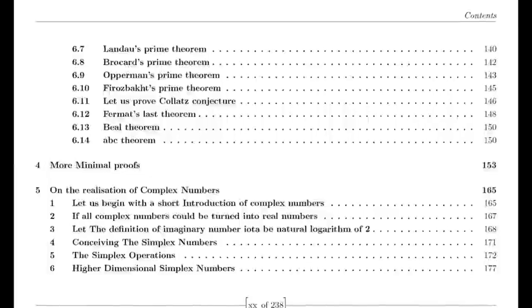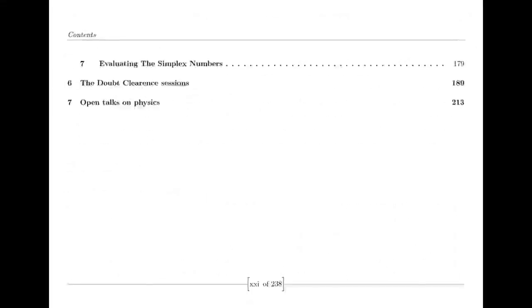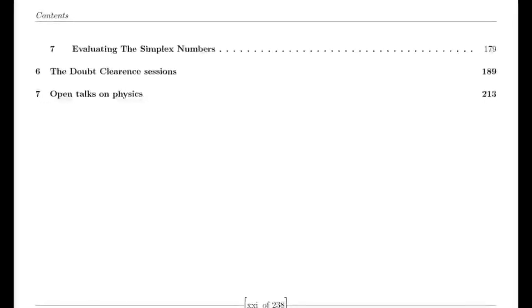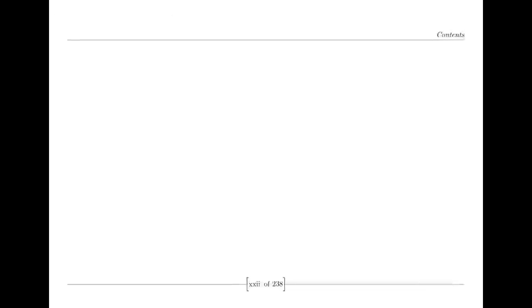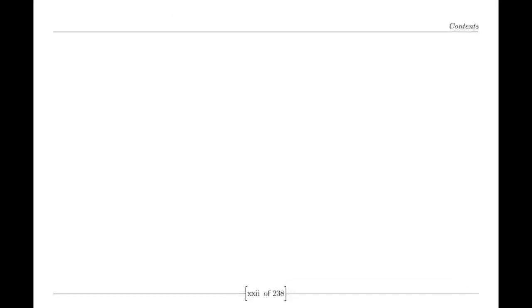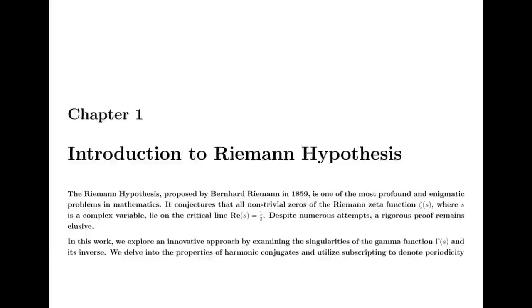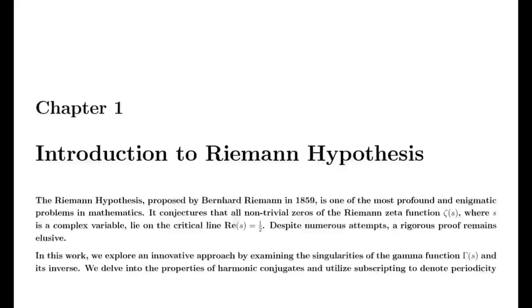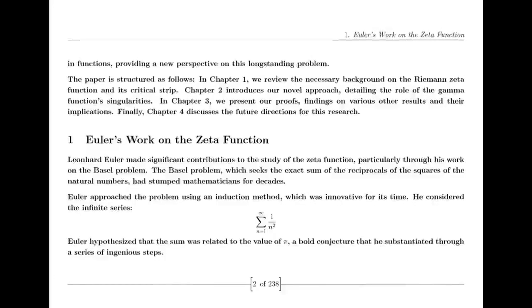Riemann was also influenced by the Dirichlet eta function, defined by an alternating series. This function is closely related to the zeta function and provides valuable insights into its behavior, particularly for values of s less than 1. The relationship between the eta function and the zeta function is encapsulated in a simple formula involving the gamma function and powers of 2, which helps in understanding the zeta function's properties across different regions.